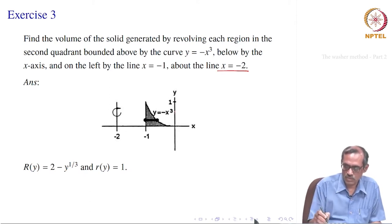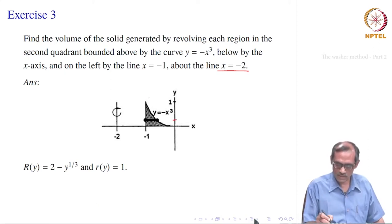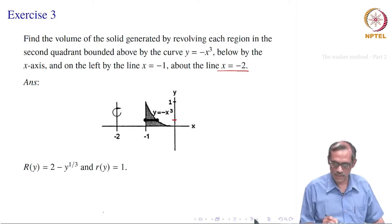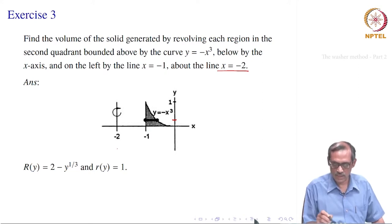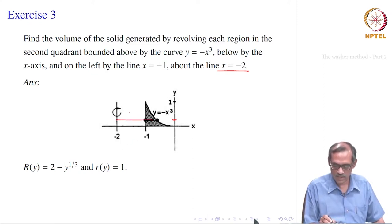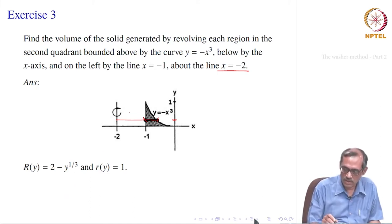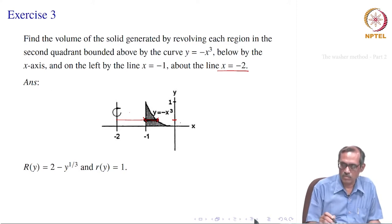Since the axis of revolution x equal to minus 2 is parallel to the y axis, the integral should be expressed in terms of y. For any chosen y inside this region, we identify the outer radius and inner radius, both measured from the axis of revolution x equal to minus 2.